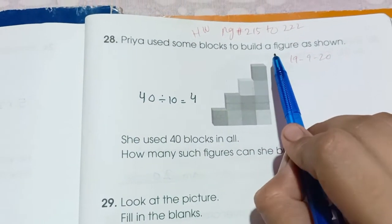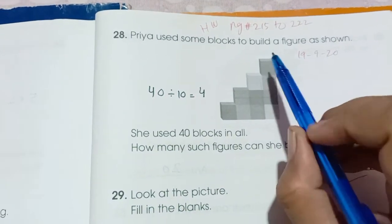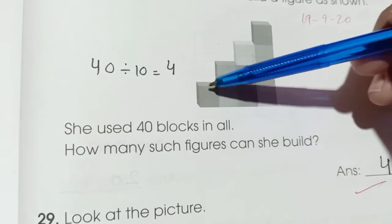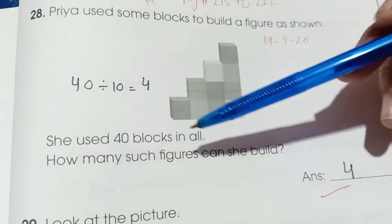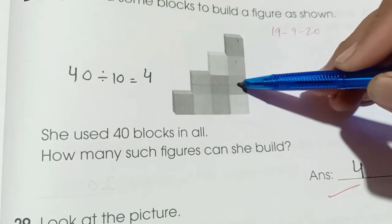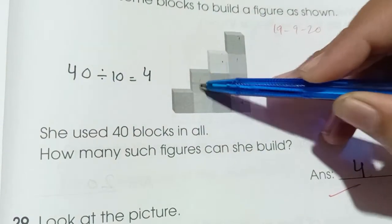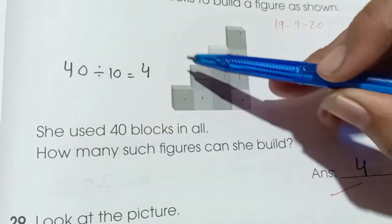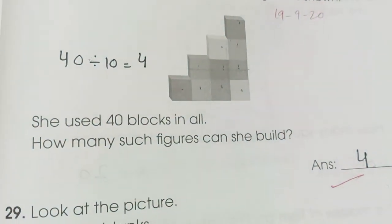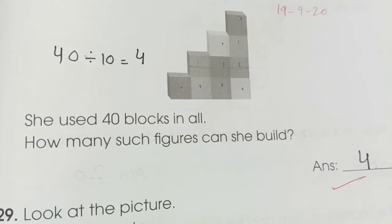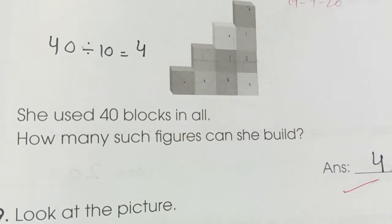Number 28: Priya used blocks to build a figure, using 40 blocks in all. Each figure uses 10 blocks. Counting: 40 divided by 10 is 4. She can make 4 such figures from the blocks.